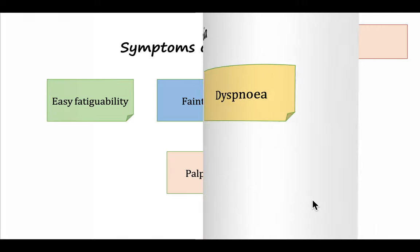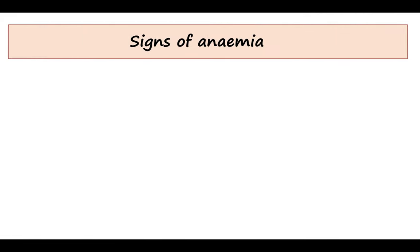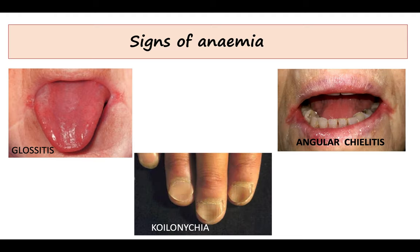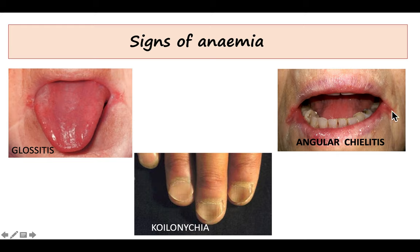Now we proceed to the signs of anemia. We examine the tongue, nails, and the angle of the mouth. The tongue will be red, inflamed, and swollen — this is known as glossitis. Koilonychia means spoon-shaped concave nails. Angular cheilitis means there is rupture or breaking at the corners of the mouth where microorganisms can proliferate and infection can occur.